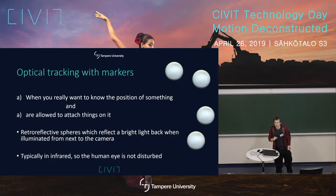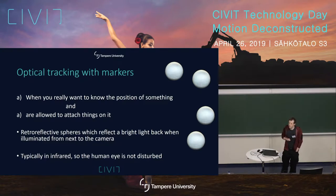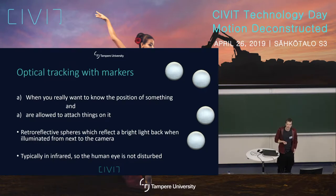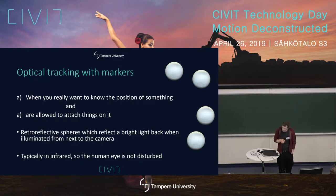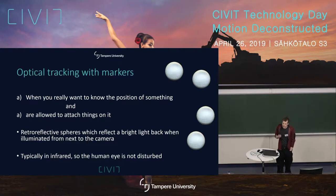When would you want to use optical tracking? Basically in cases where you really want to know the accurate position of something and you are allowed to attach something on it. This is not always the case — you might not be able to touch the object — but in many cases you can. Typically in these applications you would use retro-reflective spheres. It's just a reflector shaped like a sphere, so when you shine a light on it, it shines the light directly back into the camera.